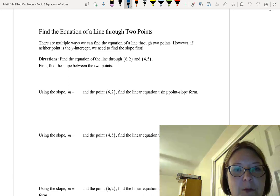But the first thing I want us to do is find that slope. I'm going to write the points vertically from each other, so (6,2) above the point (4,5).